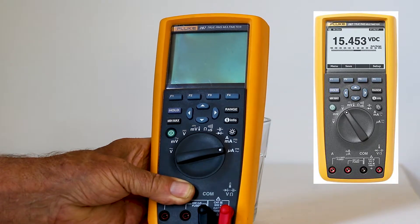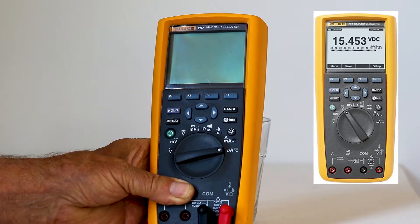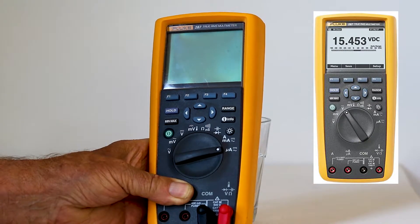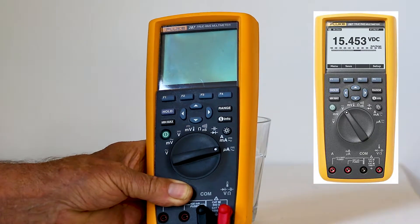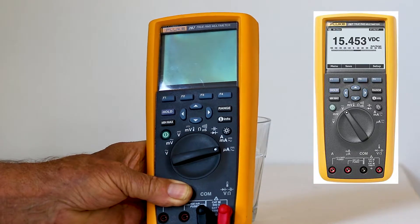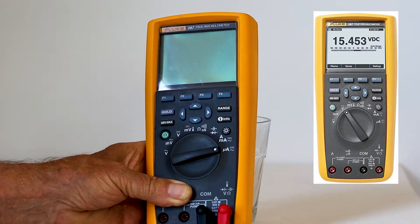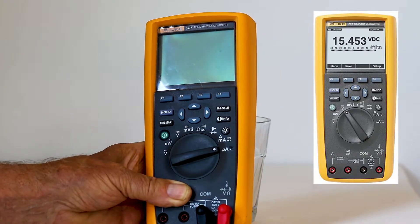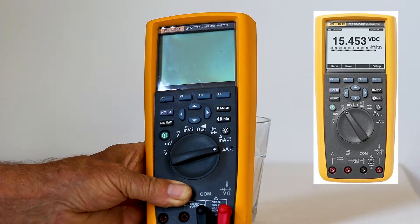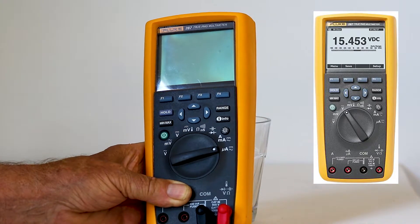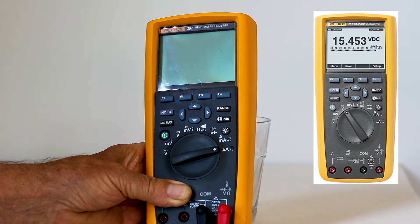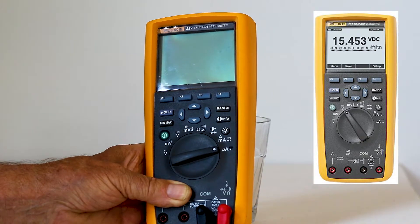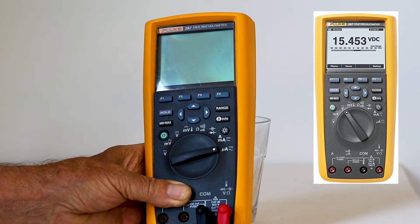Selling for under $500, the Fluke 287 multimeter measures AC and DC up to 1000 volts between any terminal and Earth, so it can be used on 480 volt variable frequency drive line inputs. The DC bus which measures 678 volts higher than the utility supply, which derives from peak to peak rather than RMS voltage, can be measured with this meter.